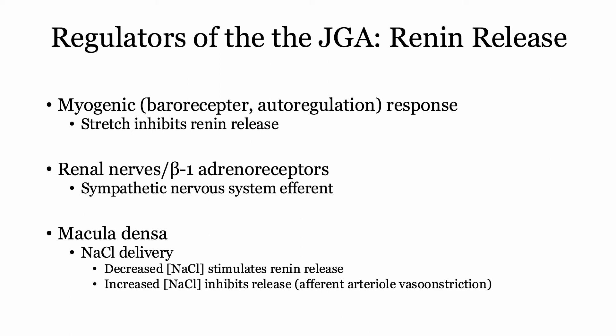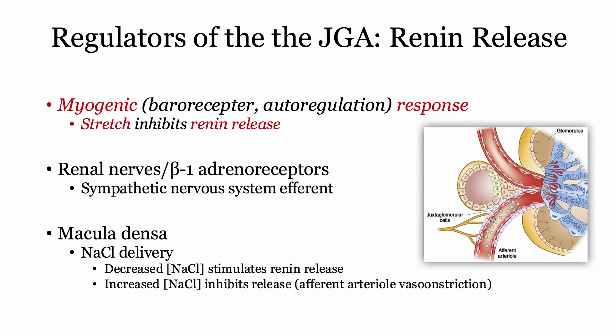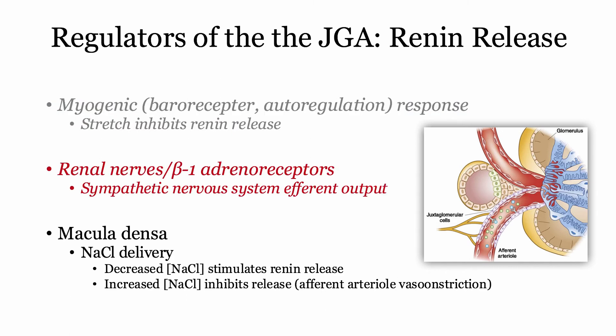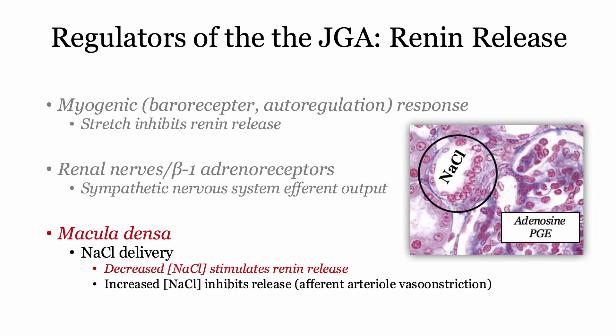So how is renin release regulated? There are three major components. First, the afferent arteriole itself exhibits a myogenic response — like other baroreceptors, it responds to stretch. Increased stretch leads to decreased renin release. The second trigger is the beta-1 adrenoreceptors: increased sympathetic outflow from the autonomic nervous system will stimulate renin release. This is the mechanism of action for beta-blockers in the management of hypertension — they block this trigger. The third relevant trigger is the macula densa: decreased salt means more renin.